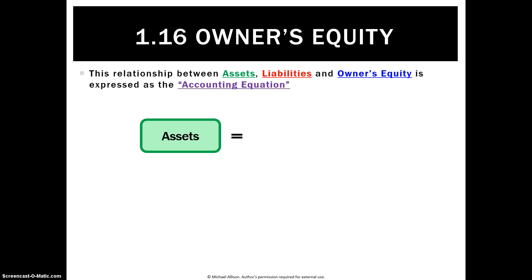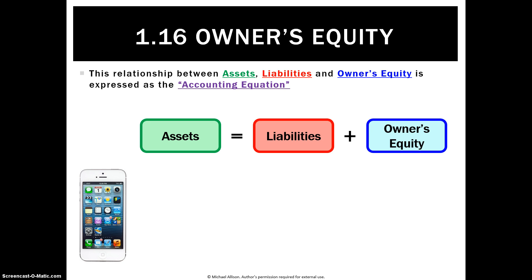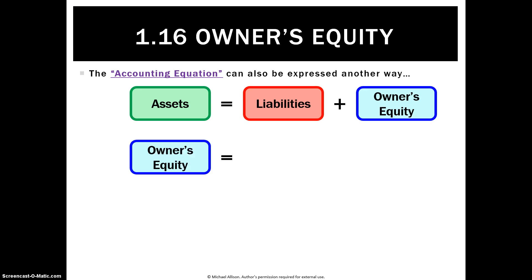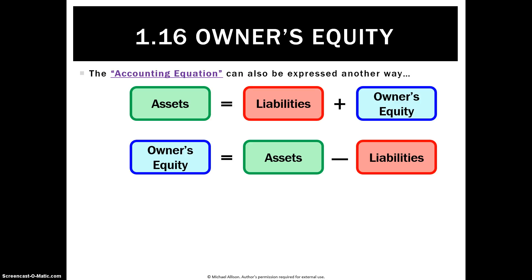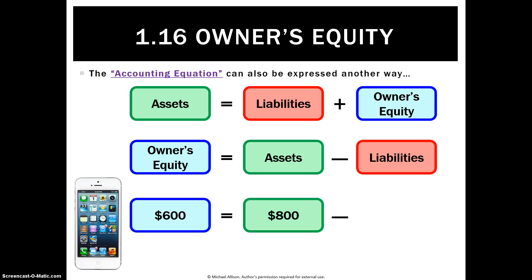We can express this relationship in what's called the accounting equation, which we'll do a lot more of in Unit 2 when we do balance sheets. Assets must always equal liabilities plus owner's equity. Using our phone as an example, an $800 phone equals $200 of liabilities — a loan to mom and dad — plus $600 of owner's equity. It can also be rearranged so owner's equity equals assets less liabilities: $600 equals $800 less $200.